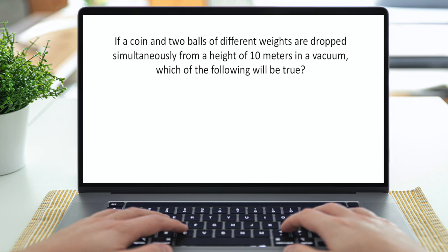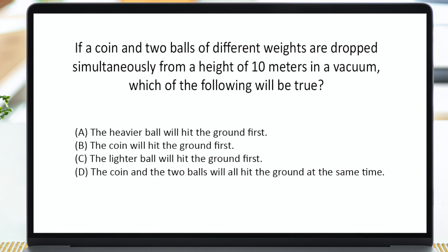The physical science category covers topics in physics and chemistry, including properties of matter, forms of energy, and types of motion. Here's a typical problem you might see: 'If a coin and two balls of different weights are dropped simultaneously from a height of 10 meters in a vacuum, which of the following will be true? A, the heavier ball will hit the ground first. B, the coin will hit the ground first. C, the lighter ball will hit the ground first. D, the coin and the two balls will all hit the ground at the same time.'